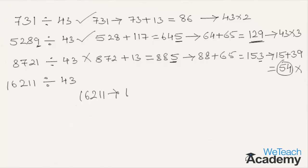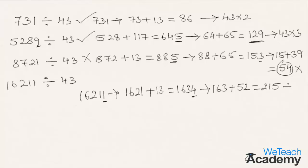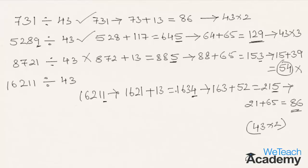The next number is 16211. 13 times the last digit 1 is 13, added to 1621 gives 1634. Repeating: 13 times 4 is 52, added to 163 gives 215. Repeating again: 13 times 5 is 65, added to 21 gives 86. Since 86 is divisible by 43 (43 times 2), the given number 16211 is divisible by 43.